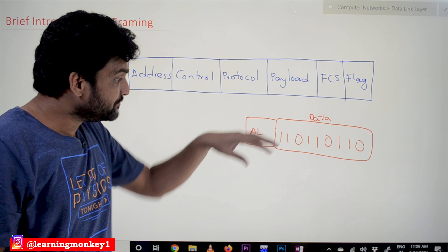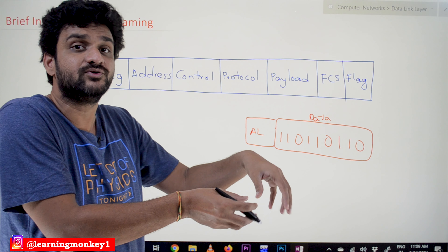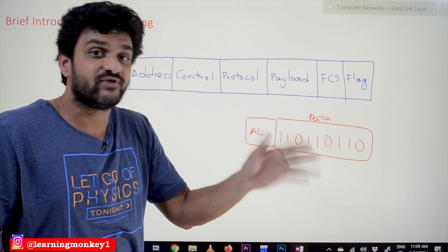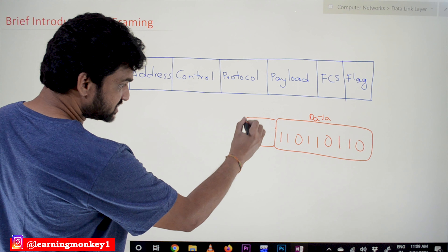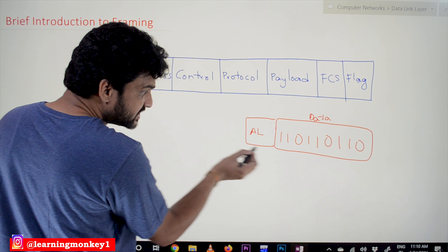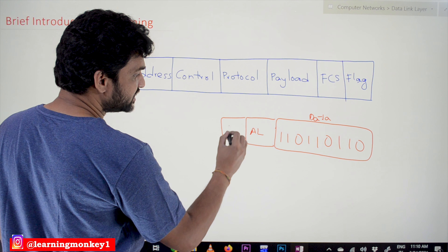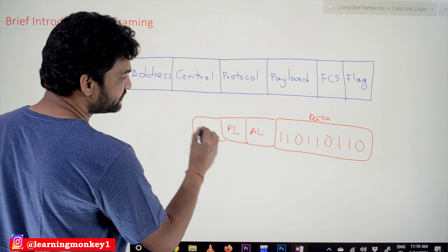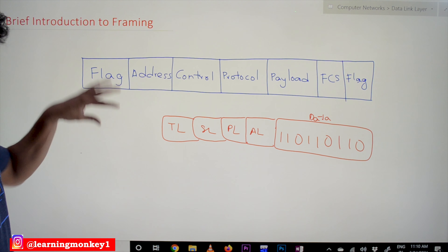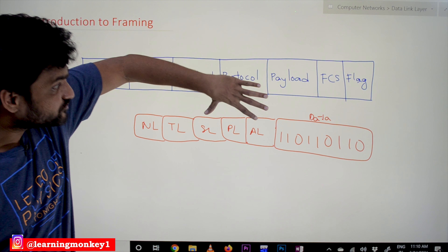Based on the functionalities of each layer, we attach extra bits to understand whether the functionalities of that particular layer are performed well or not. The application layer fields get added, then it is forwarded to the presentation layer, then session layer, then transport layer, and then network layer — each adding their own fields. Now this entire content is what we call payload.